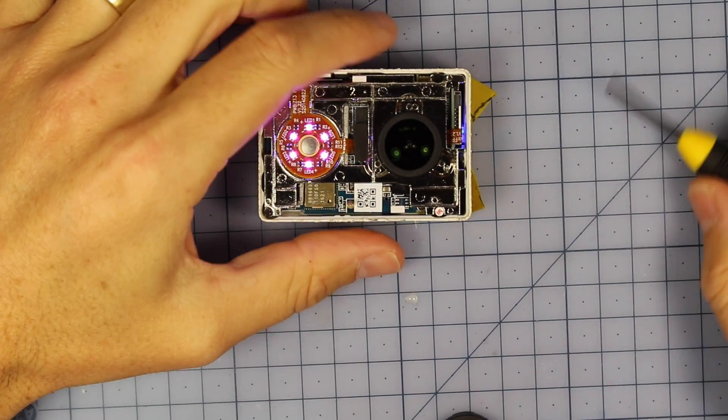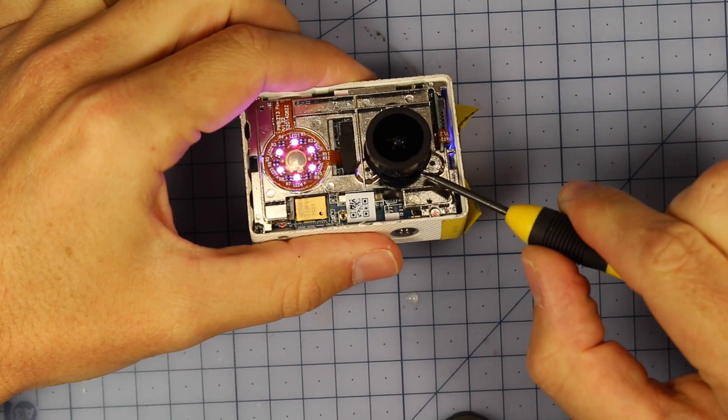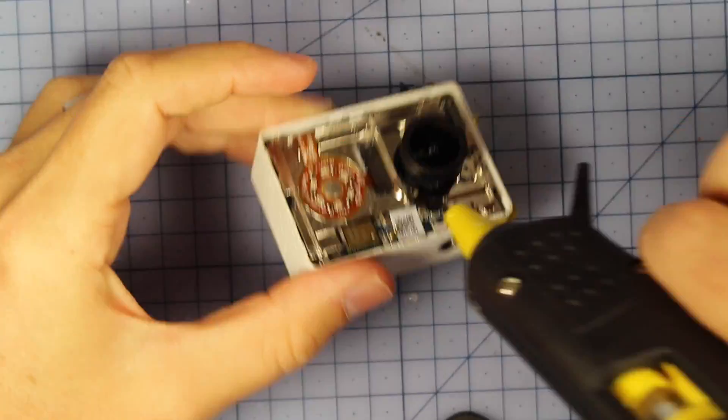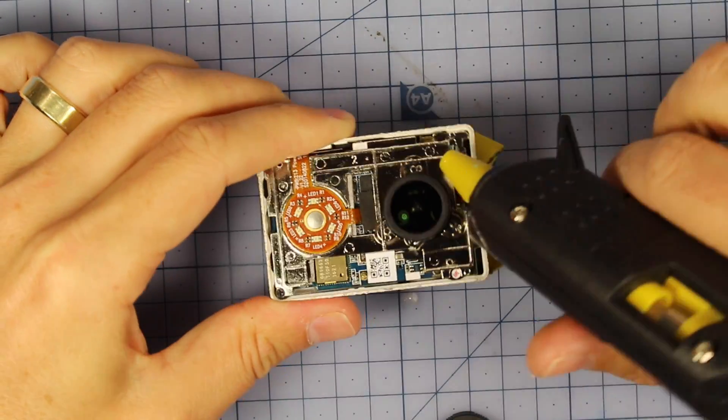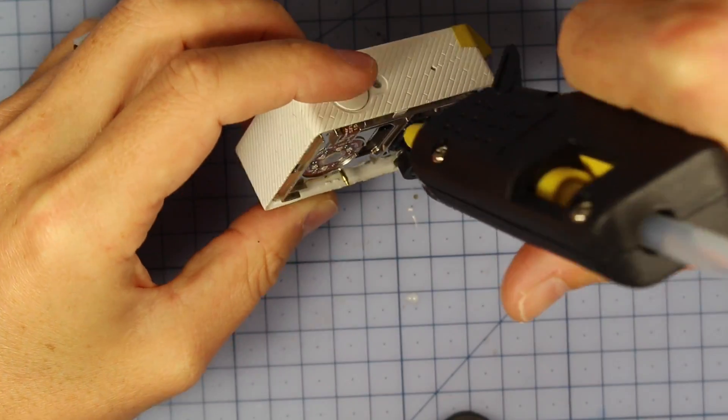All right. So I've gone outside and I focused it. Now what we need to do so it doesn't spin around anymore, I'm just going to put a little dollop of hot glue in here to stop the lens spinning around and becoming out of focus. Make sure you don't get any hot glue actually on the lens. There we go.